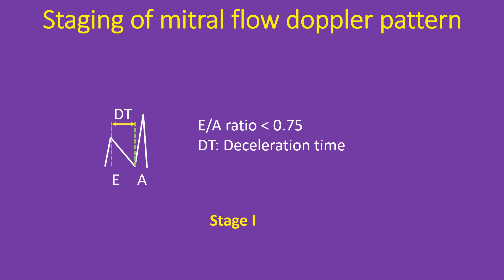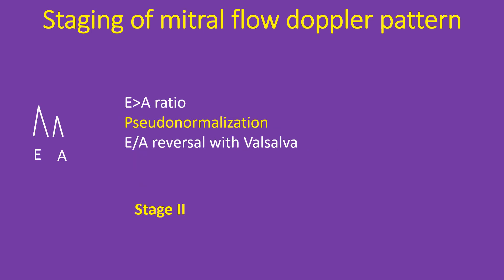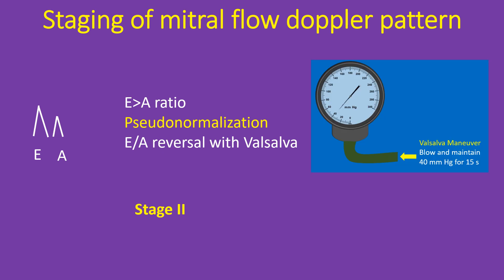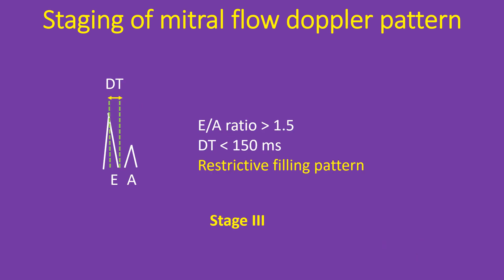The deceleration time of early diastolic filling (DT) is normally less than 220 ms and is prolonged in diastolic dysfunction. These patients are generally asymptomatic. In Stage 2 diastolic dysfunction, the E wave becomes taller due to elevated left atrial pressure — this is called pseudo-normalization — and E by A reversal can still be demonstrated during Valsalva maneuver. In Stage 3, the E wave becomes very high so that the E by A ratio is more than 1.5 and the DT is below 150 ms. This is also called the restrictive filling pattern.